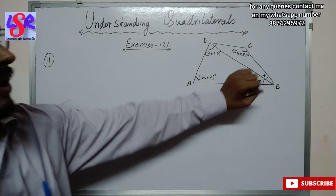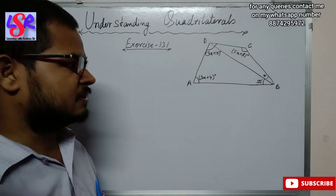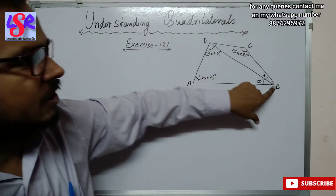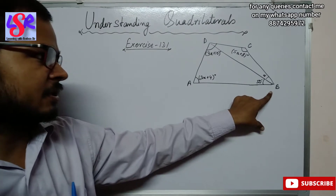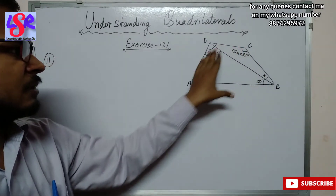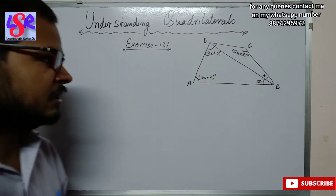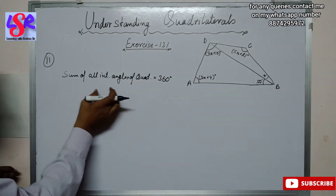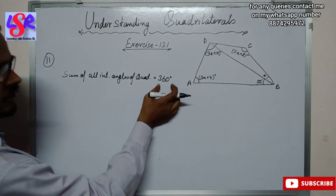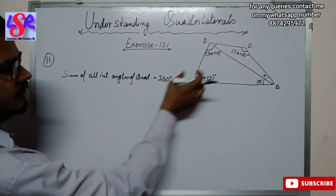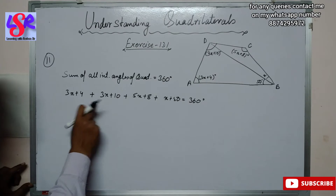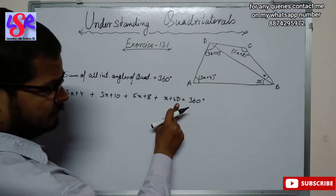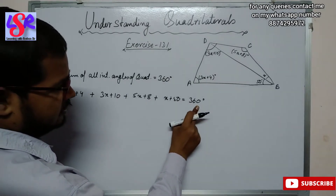First of all, we have to find the value of x. We know the sum of all interior angles of the quadrilateral is 360 degrees. Therefore the sum of all angles equals 360 degrees: 3x plus 4, plus 3x plus 10, plus 5x plus 8, plus x plus 50 equals 360 degrees.